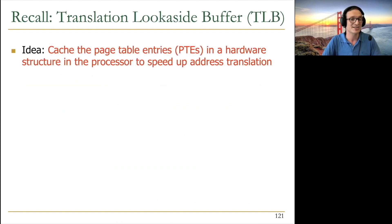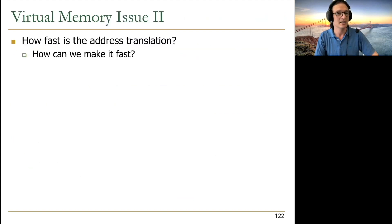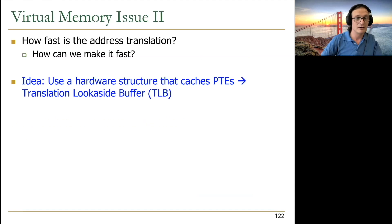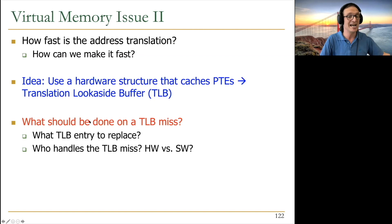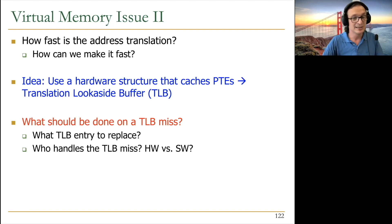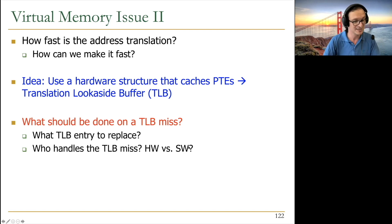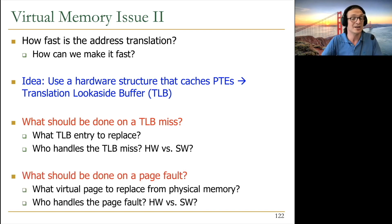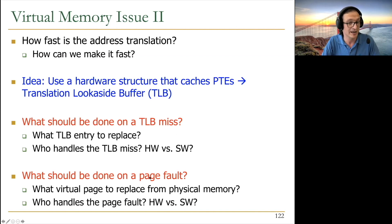For issue two — how to speed up address translation — we know about TLBs. But what happens on a TLB miss? What entry do you replace? And who handles the miss — hardware or software? There are advantages and disadvantages to each. Also important: TLB miss is very different from a page fault. A TLB miss means the translation isn't cached in the hardware TLB.